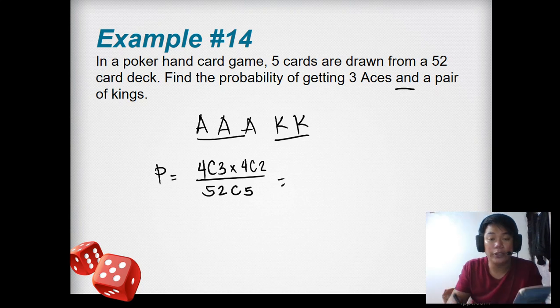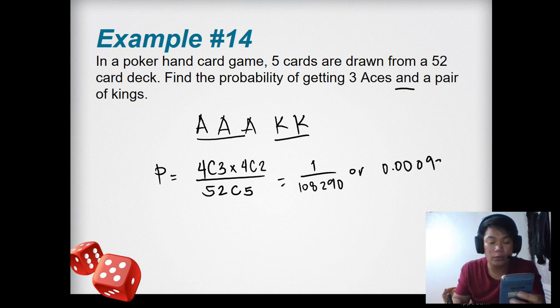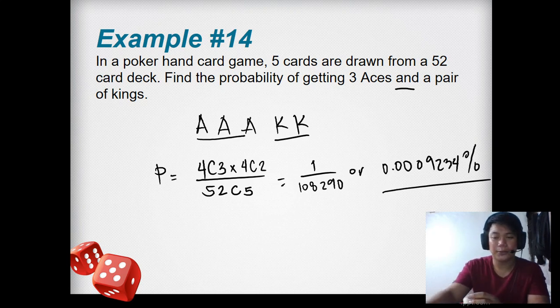When we compute this: 4C3 times 4C2 over 52C5 equals 1 over 108,290, or in decimal 0.0009234 percent. Very low probability, right?